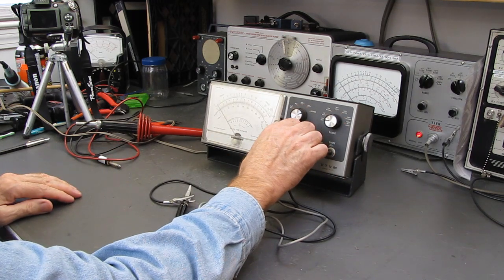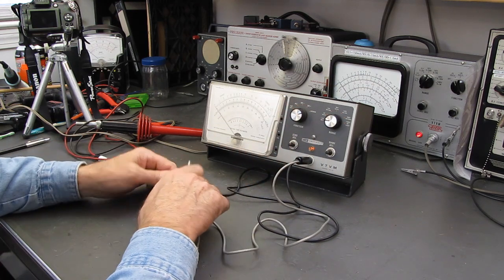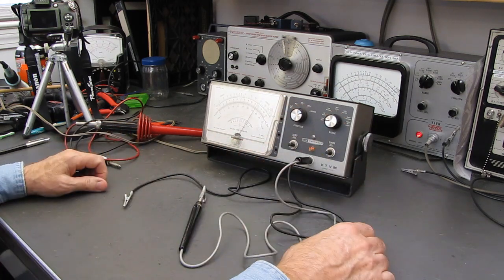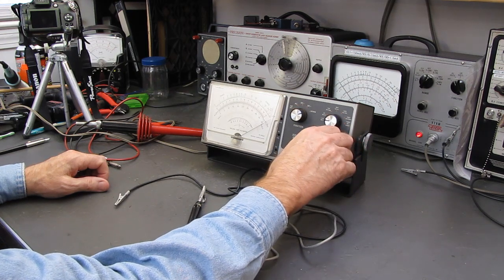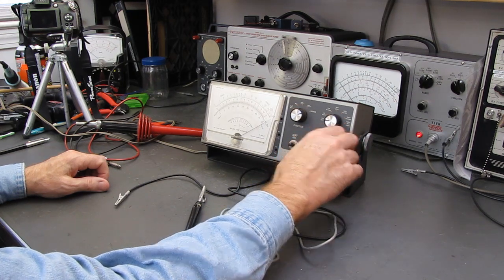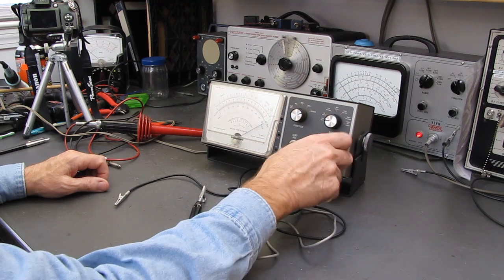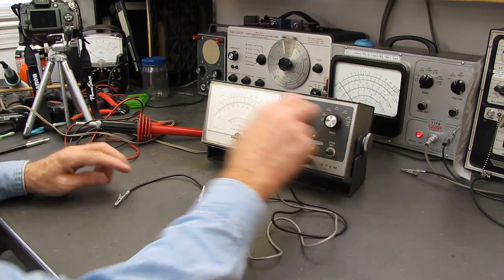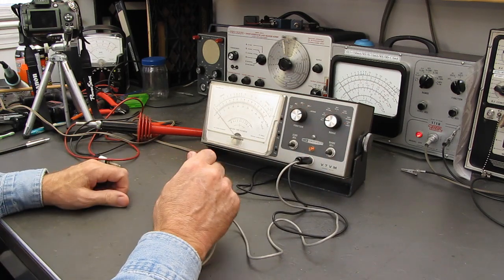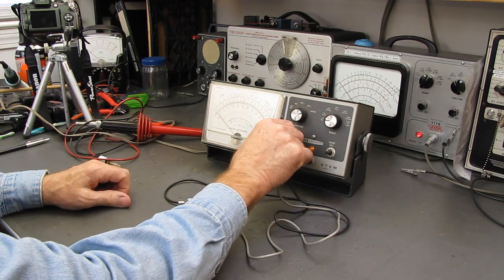Well, it seems to be pegged all the way to the left-hand side of the scale. Let's go to ohms. Now it's pegged all the way to the right-hand. Let's set zero. That almost appears to be functional. Wow, that's an awful slow response.